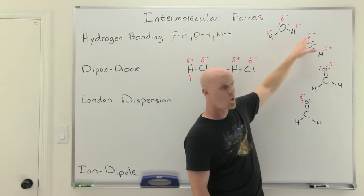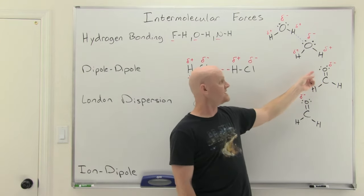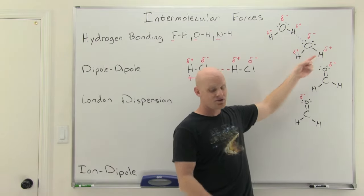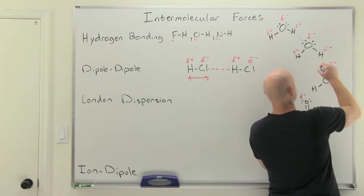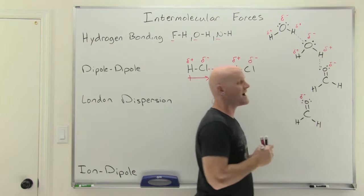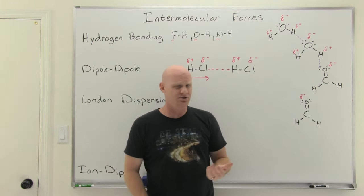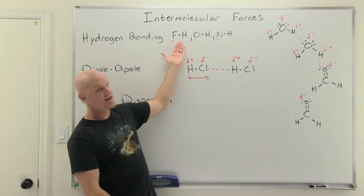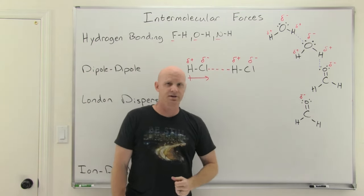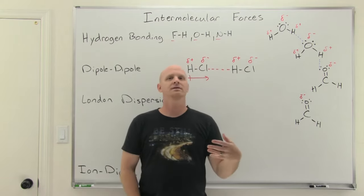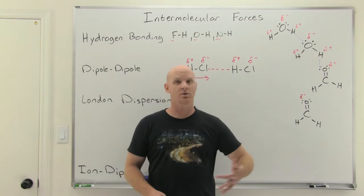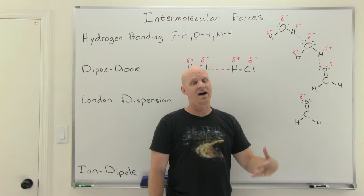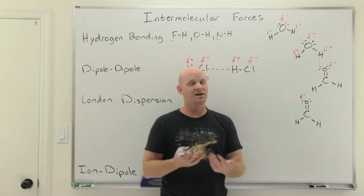If you mix formaldehyde with water, formaldehyde molecules can still act as hydrogen bond acceptors — just not donors. Water can act as the donor, so the interaction between the lone pair on the oxygen of formaldehyde and one of the hydrogens of water would also be hydrogen bonding. There are two types of questions: which molecule is capable of hydrogen bonding as a pure liquid — you need an FH, OH, or NH bond. Or which can take part in hydrogen bonding when mixed with water — you just need to be a hydrogen bond acceptor, meaning an F, O, or N with lone pairs.